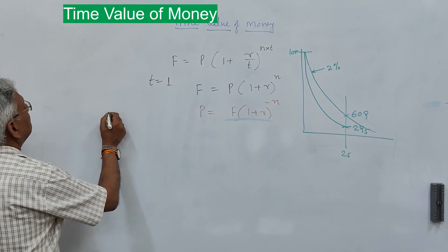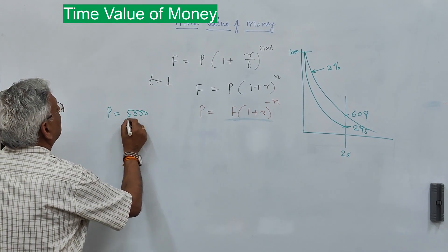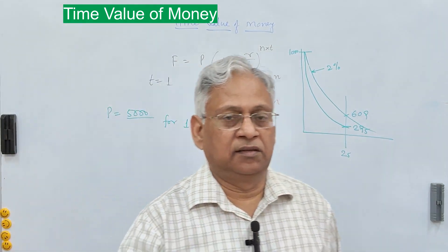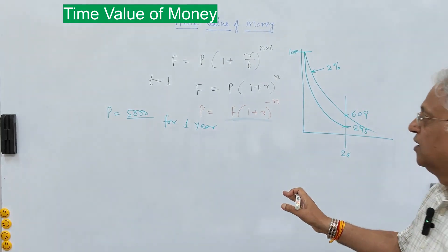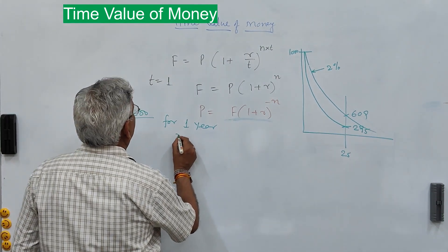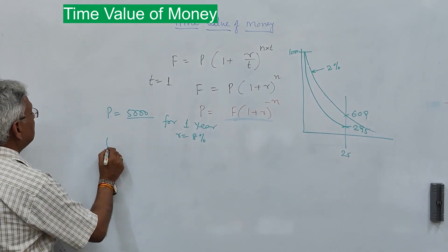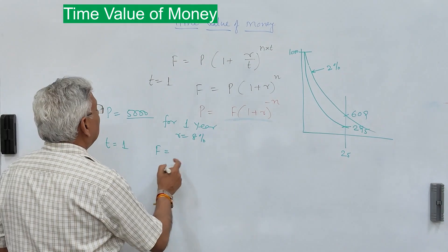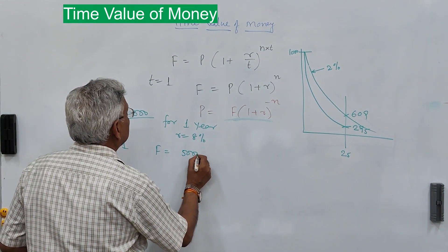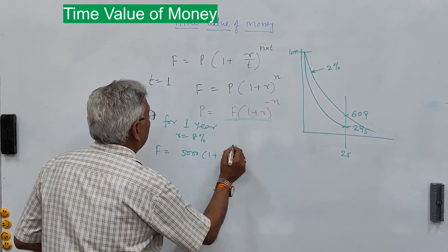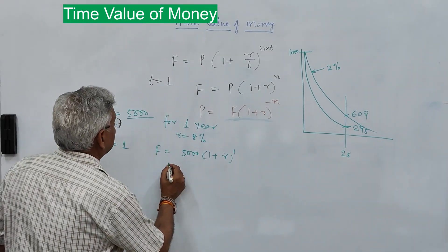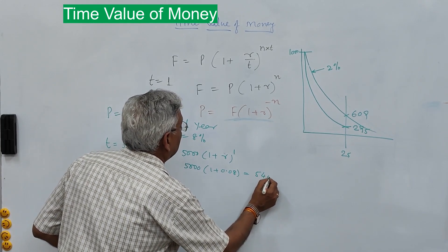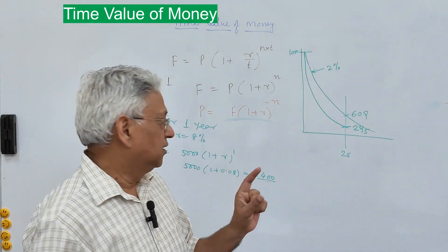Let's take one example. The present investment is 5000 rupees for one year. We deposit in a bank 5000 rupees for one year at an interest rate of 8 percent. Now if interest is paid annually, that means T equals 1, then this future value of 5000 rupees after one year will be 5000(1 + 0.08)^1, which equals 5400 rupees after one year if interest is paid annually.